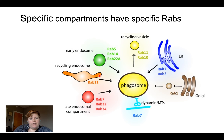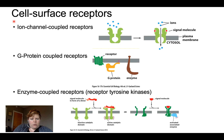Now moving back to receptor proteins: we've seen ion channel coupled receptors quite a bit, so we won't dwell on those. G protein coupled receptors work with specific kinds of G proteins — the large multi-subunit ones. Enzyme-coupled receptors have enzymatic pieces that can perform reactions. We'll see specific examples of receptor tyrosine kinases, which add phosphate groups.